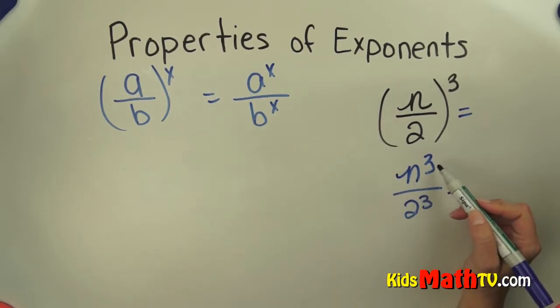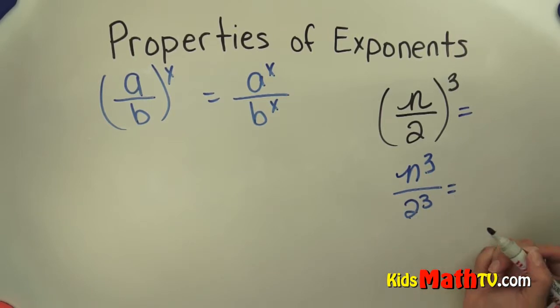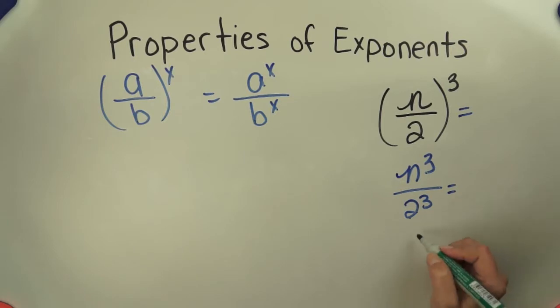I can't simplify n to the power of 3, but I can simplify 2 to the power of 3, which is 2 times 2 times 2, which is 8. So this simplifies down to n to the power of 3 over 8.